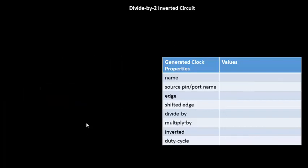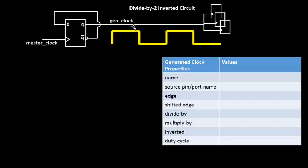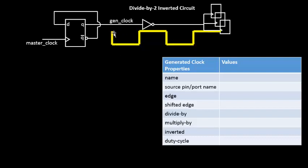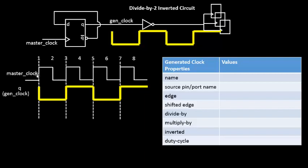Now let's look at another circuit: the divided-by-2 inverted circuit. The waveform looks like this — initially you have the master clock and the gen clock is a divided-by-2 of the master clock. But if you add an inverter, the waveform shape gets inverted. It is still a divided-by-2 of the master clock, but in inverted form.